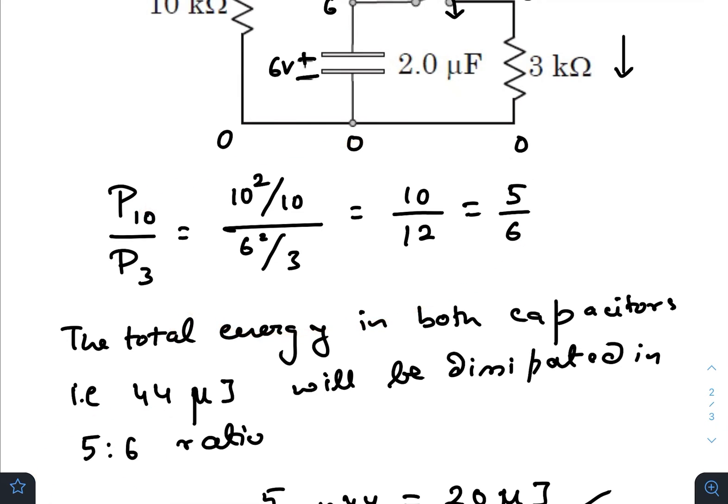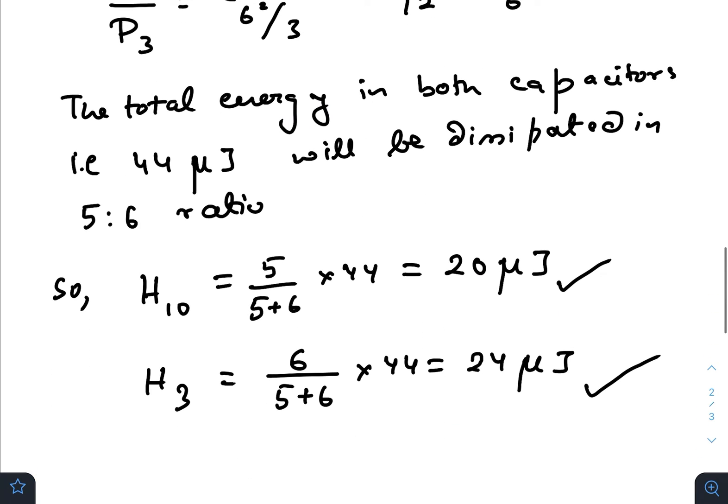So heat dissipated across the 10k resistance would be 5 divided by 5 plus 6 times 44, that is 20 microjoules. Similarly for the 3k resistance it will be 24 microjoules.